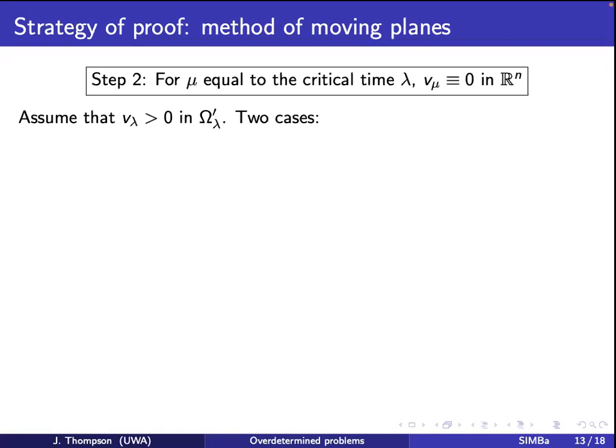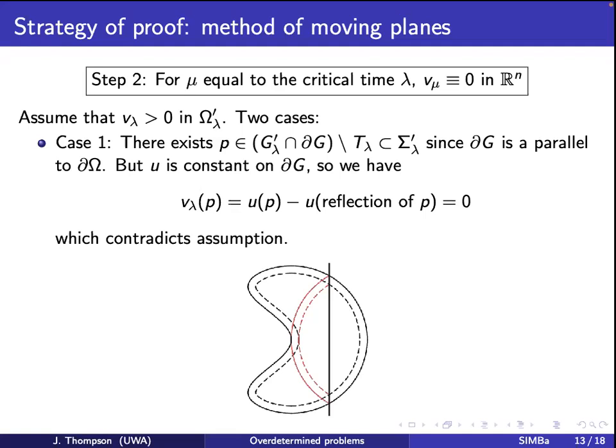Step two is by contradiction. You're now non-negative, so you use the strong maximum principle: either you're zero everywhere, or you're strictly positive in omega_lambda-prime. Assume by contradiction you're strictly positive. In case one — when the reflective region internally strikes the other boundary — in the parallel surface problem, U is constant on the parallel surface. So when you evaluate V at that point, U is a constant and its reflection is the same constant, making V zero at that point — contradicting the assumption that V was positive.